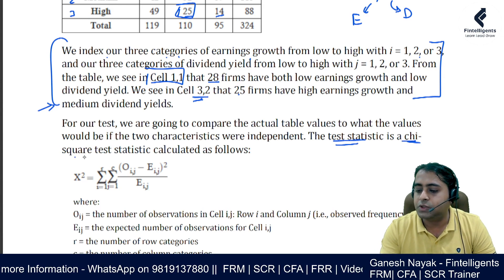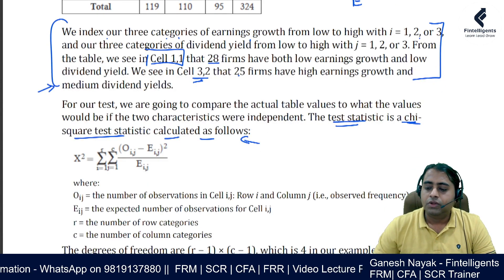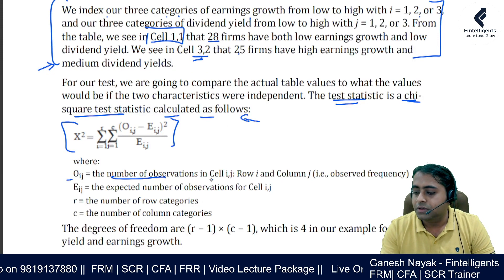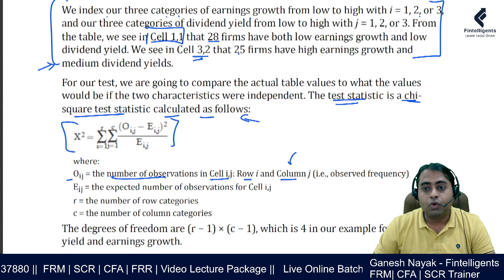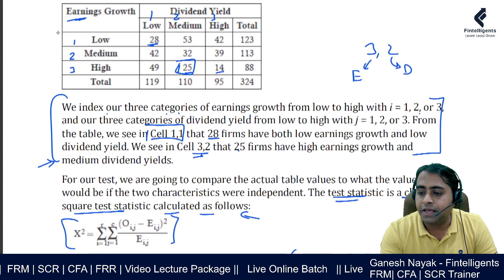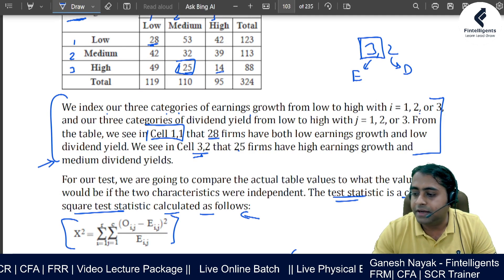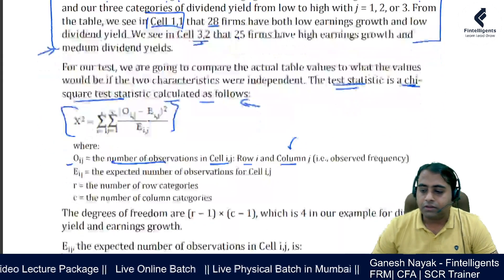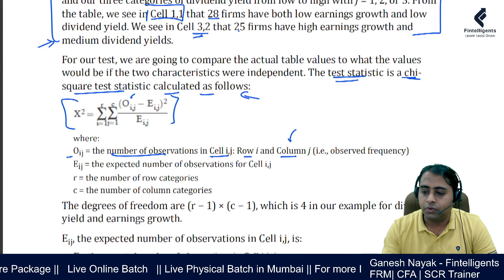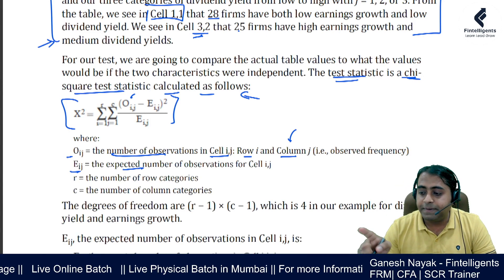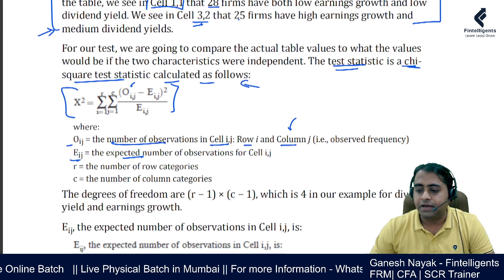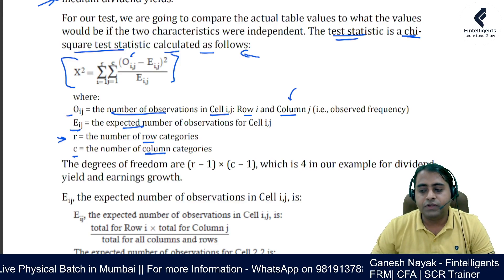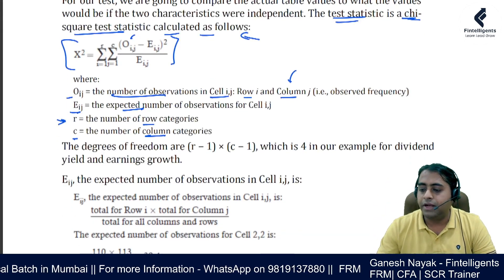The test statistic for the contingency table is a chi-square test. In the formula, O refers to the observed number of observations in each cell (indexed by row i and column j), and E refers to the expected frequency for that cell. R refers to the row category and C to the column category. The degree of freedom is (R minus 1) times (C minus 1). With 3 rows and 3 columns, the degree of freedom is 2 times 2 equals 4.